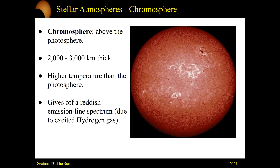Going one step above the photosphere, we reach the chromosphere, which has a very distinctive reddish glow. It extends between 2,000 and 3,000 kilometers above the surface. What's giving it this reddish glow is specifically an emission from the excited hydrogen gas there. The hydrogen gas is producing photons due to their emission spectrum — they're hot, they're excited, they're glowing and radiating. Because it's hydrogen, they predominantly produce this reddish tinge of photons, and that's also what's keeping the chromosphere at a relatively stable temperature.